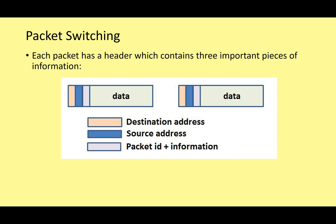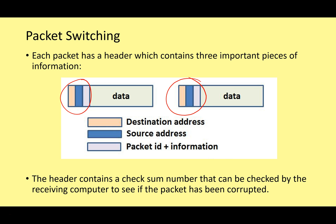Each packet has a header containing three important pieces of information: the destination address, the source address, and the packet ID. You'll recognize that part of the responsibility for this is IP — the internet protocol. The packet ID also contains information like a checksum number, which is a way of checking that all the data has arrived correctly.